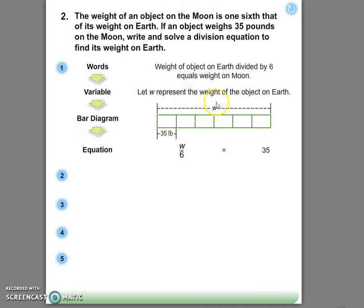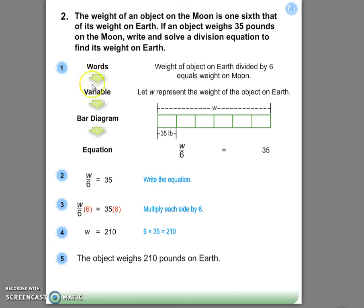What that means is if we take our W and chop it up into six pieces, we should get our weight on the moon, 35 pounds. The way to isolate your variable is to multiply both sides by 6. W over 6 times 6 just gives me W. 35 times 6 gives me 210. So we know our solution is 210 pounds on earth.